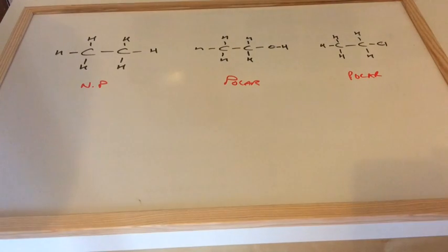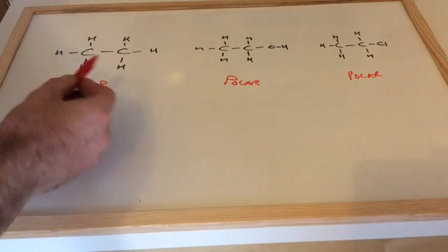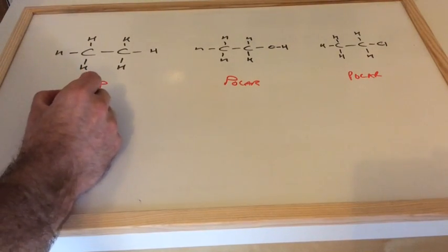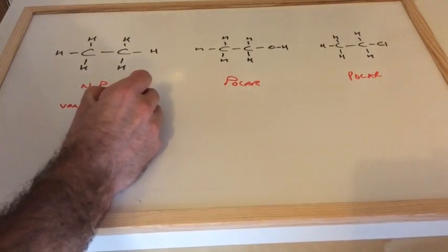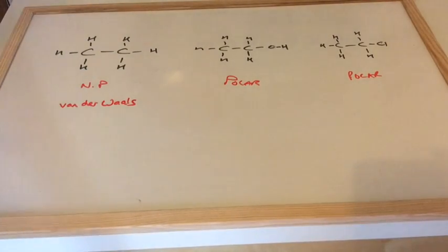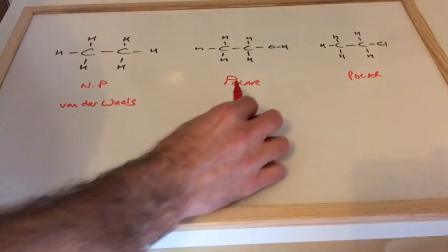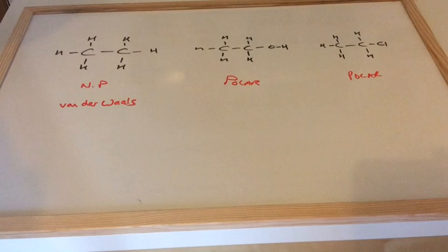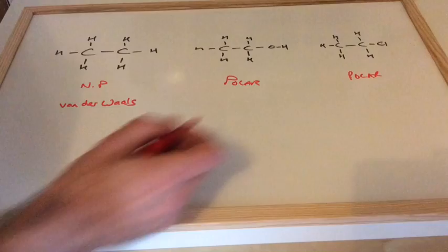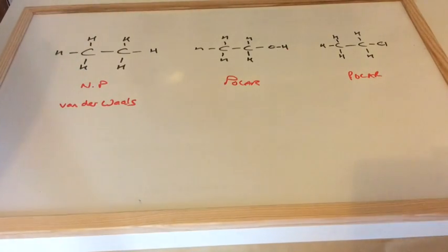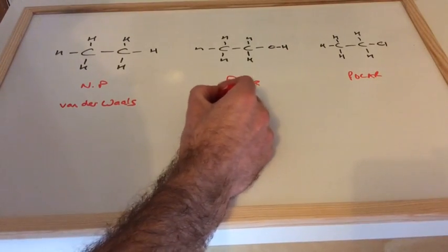What kind of intermolecular forces do we have between non-polar molecules? There's only one answer, and that's van der Waals. They're the weakest intermolecular forces. Our options with polar molecules can either be permanent dipole-permanent dipole, or it can be hydrogen bonding. We need to look at the rule for hydrogen bonding. We need an H directly bonded to an F, an O, or an N. Well you can see we've got an H directly bonded to an O. And so this will have hydrogen bonding.